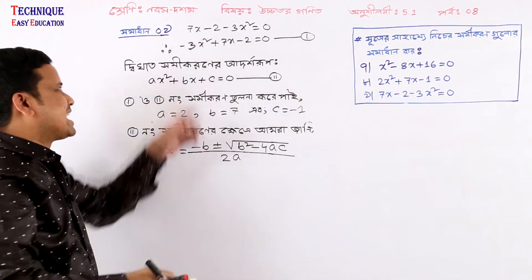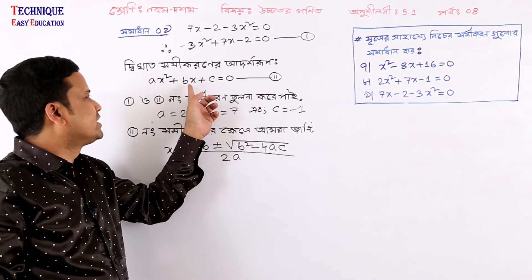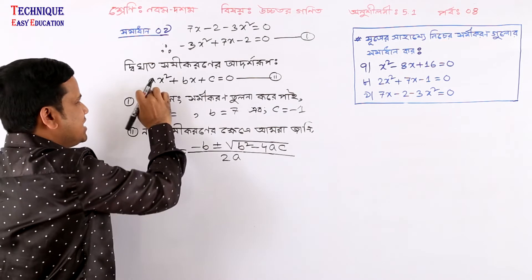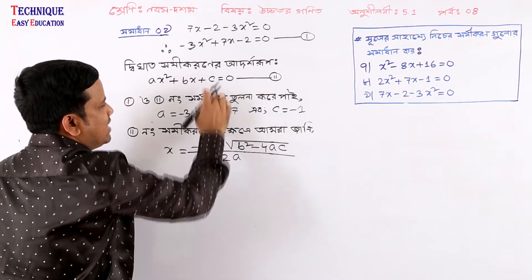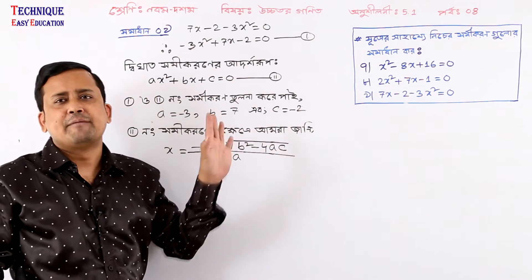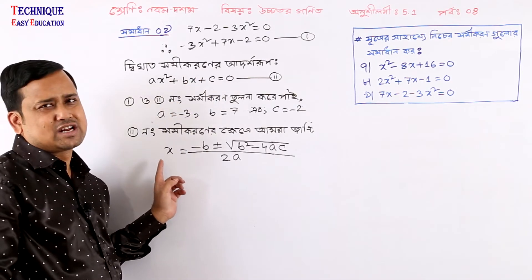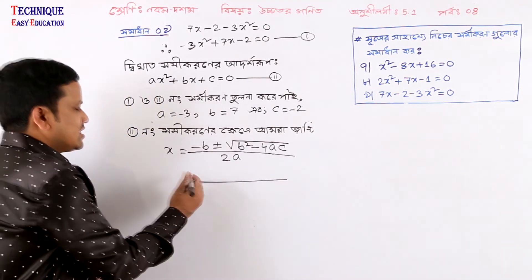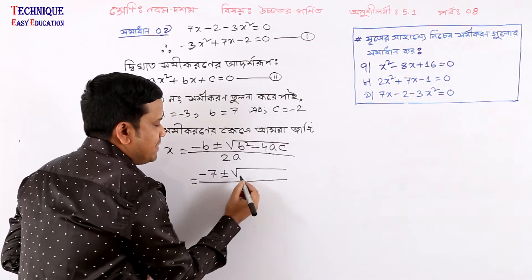I have to write x squared plus x plus constant. So I will write: a is minus 3, and x coefficient b is 7, and minus 2 means c equals minus 2. See, you can write a, b, c. A means minus 3, so I will write minus 3. B equals 7.